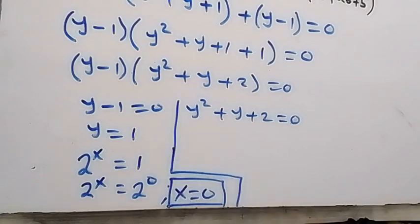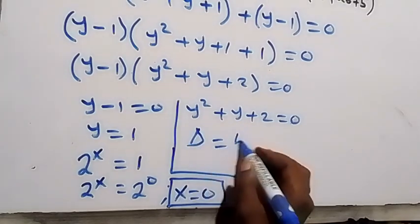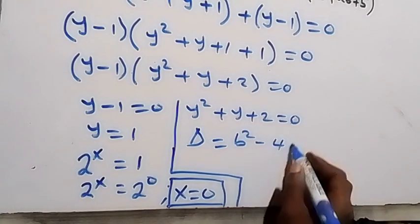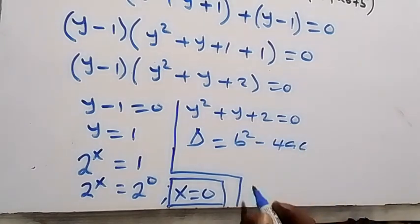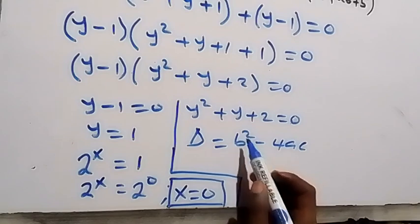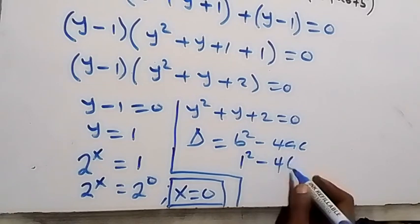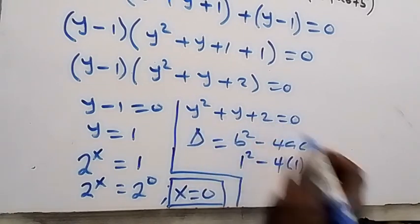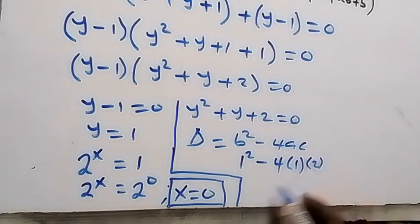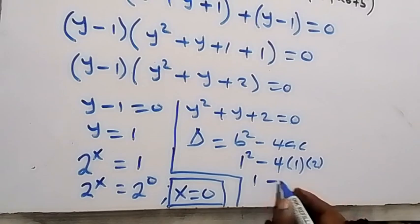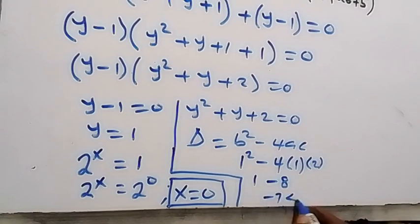For the second case, let's check if y squared plus y plus 2 equals 0 has a real solution using the discriminant b squared minus 4ac. Here b is 1, a is 1, and c is 2, so we get 1 squared minus 4 times 1 times 2, which is 1 minus 8, giving minus 7. Since this is less than 0, there is no real solution here.